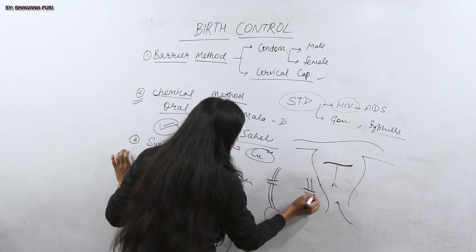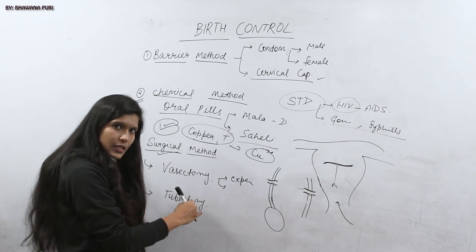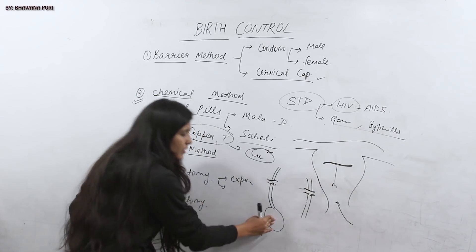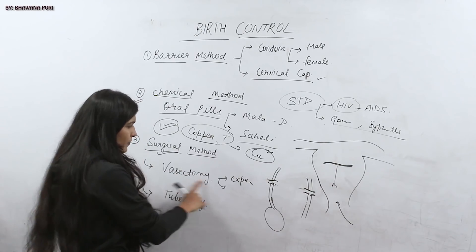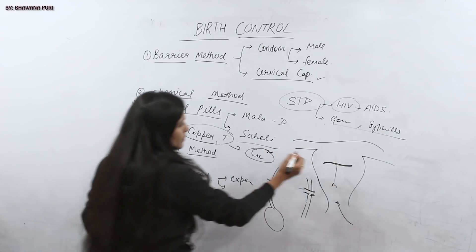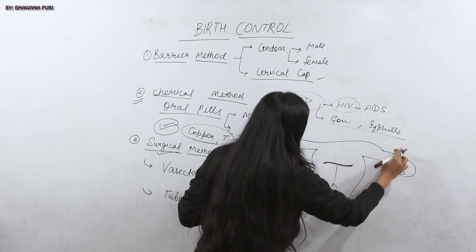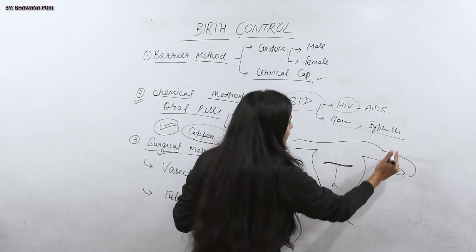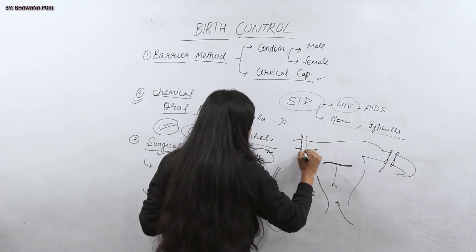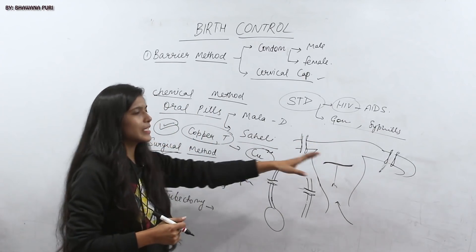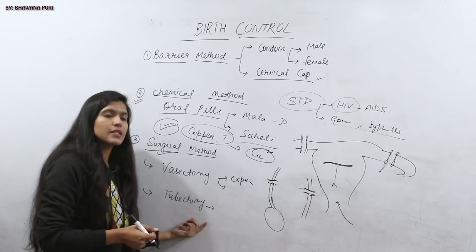In vasectomy, the vas deferens is cut and tied up so that sperm cannot enter the female body during intercourse. In tubectomy, performed on females, the fallopian tube — also called the oviduct — is individually cut and tied up. This procedure is called tubectomy.